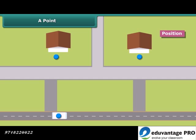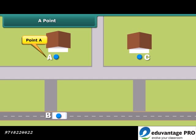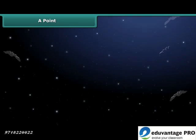A point is labeled with a capital letter like A, B, or C. These points are read as point A, point B, and point C. A natural example of a point is a star in the night sky.